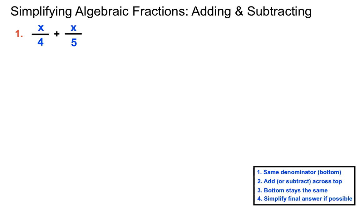In this first example we have x over 4 plus x over 5. Let's turn these fractions so they have the same bottoms, the same denominator. We need the lowest common multiple of 4 and 5 — a number that 4 can go into and 5 can go into. The smallest one of those is 20.